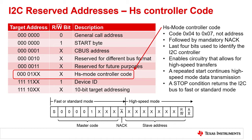The controller code for a high-speed mode controller device is software programmable and is chosen by the system designer. Devices that support high-speed mode start operation in standard or fast mode. The controller code enables high-speed mode. The high-speed controller code allows for arbitration between the high-speed controllers and it indicates the start of a high-speed mode transfer. It enables internal current sources allowing the I2C communication bus to be faster than with just pull-up resistors.